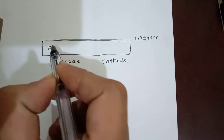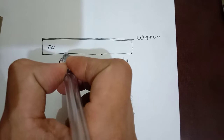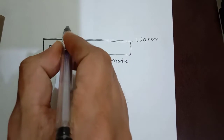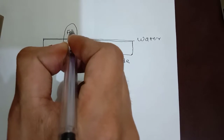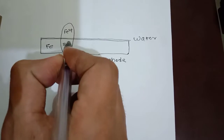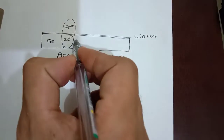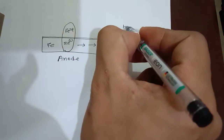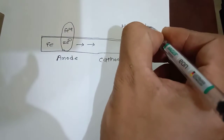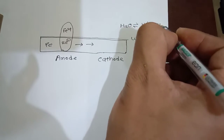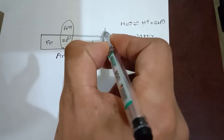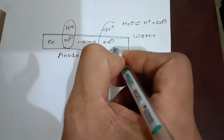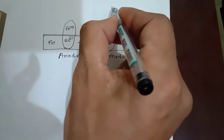This is an iron surface. At the anode, Fe will oxidize to Fe2+ and the Fe2+ ions will come into solution, leaving two electrons on the surface. These electrons will travel toward the cathode. At the cathode, the water molecule will dissociate into H+ and OH−. The H+ will react with two electrons and form H2.